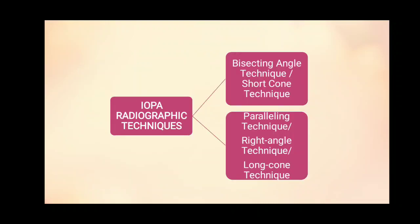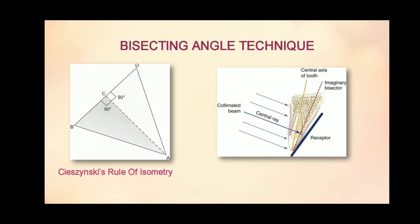There are two IOPA radiographic techniques: the bisecting angle technique, also called the short cone technique, and the paralleling technique, also called the right angle or long cone technique. The bisecting angle technique is also called the short cone technique due to the short target film distance.